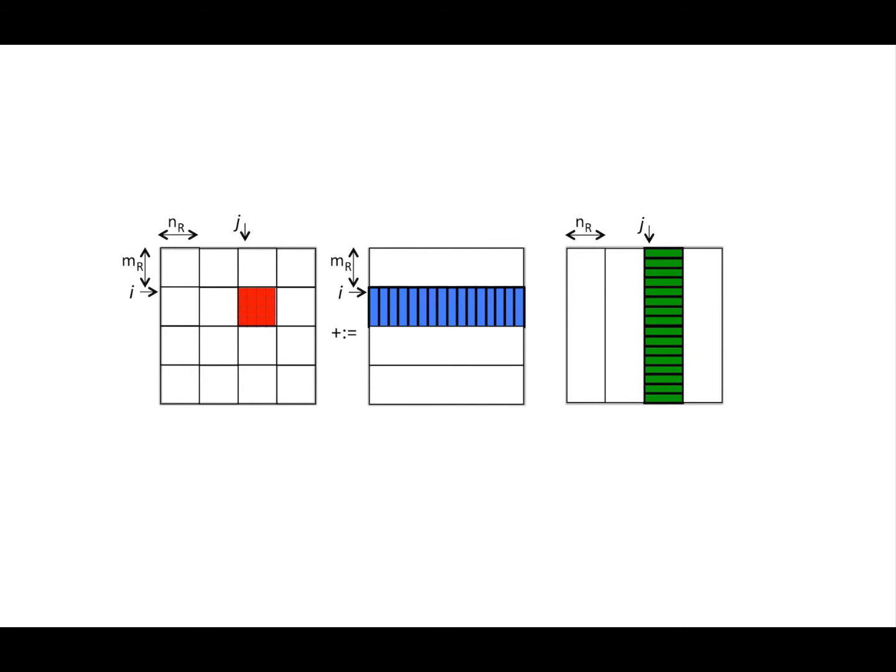It suffices to partition matrix A into row panels, matrix B into column panels, and to then perform a matrix-matrix multiply with those entire panels all at once, orchestrating those as a sequence of rank-1 updates.